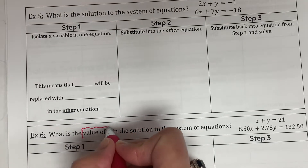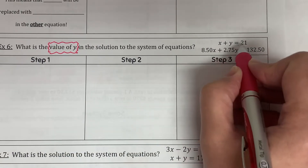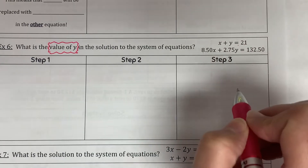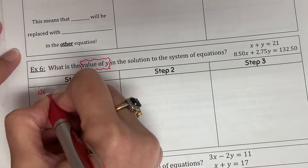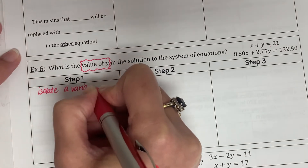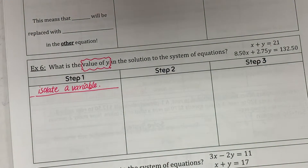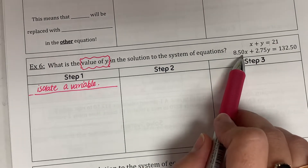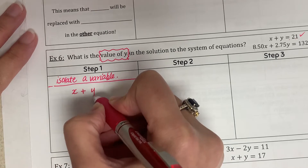The question asks: what is the value of y in the solution to the system? The system is x + y = 21 and 8.50x + 2.75y = 132.50. In the previous questions, I already had an isolated variable. In this case, I do not have an isolated variable, so step one is to isolate a variable. It would be a bad idea to isolate x or y from the second equation — that would be a disaster.